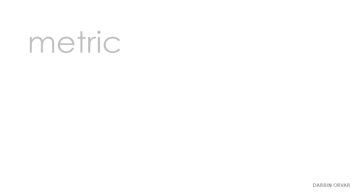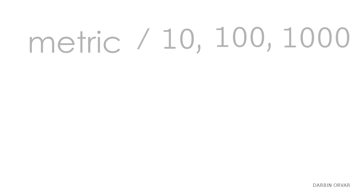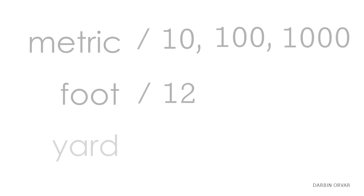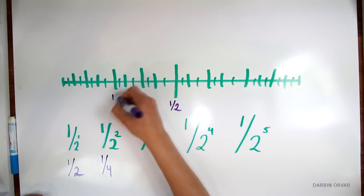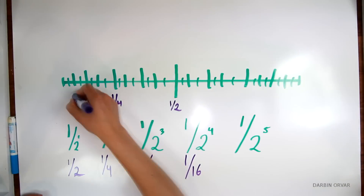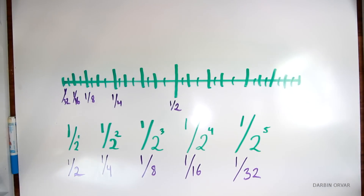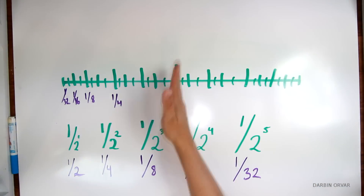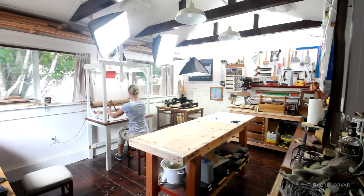Where the metric system is divided into 10, 100, or 1,000, and where a foot is divided into 12 and a yard into 3 — an inch is divided in the only way that really makes sense to me: it is divided into halves. In fact, you can divide any distance in half infinitely, or to any precision you need.